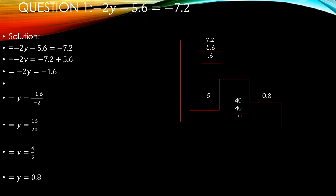Let's start question number 1, which is the linear equation in one variable: minus 2y minus 5.6 is equal to minus 7.2. Let's start the solution. You can see there are two sides, right hand side and left hand side. First you write the question again in the solution.